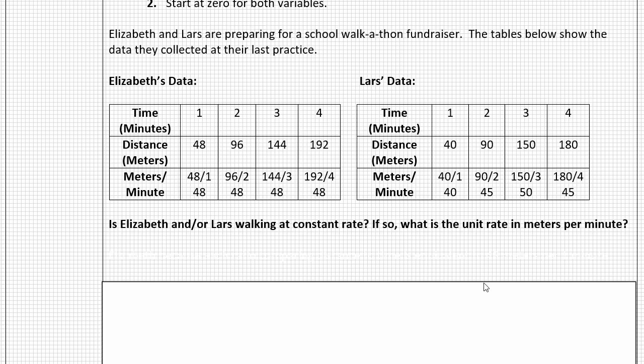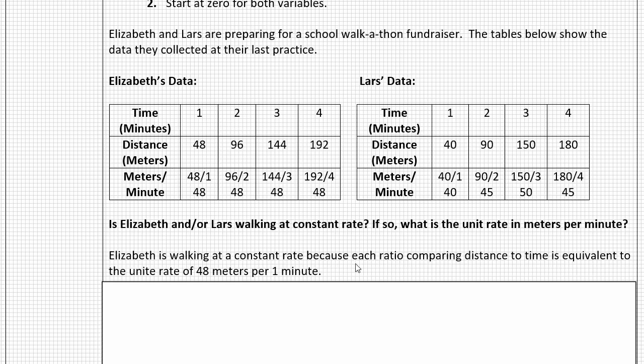To answer that question, we'd want to state something like this: Elizabeth is walking at a constant rate because each ratio comparing distance to time is equivalent to the unit rate of 48 meters per minute. And we can see that there in our calculations.